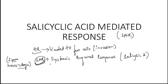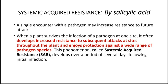What will systemic acquired resistance do? It will increase the levels of certain defense compounds including chitinases and hydrolytic enzymes. The signal molecule here is salicylic acid. SAR is activating chitinases, which are PR proteins, and some hydrolytic enzymes which hydrolyze the wall of the pathogen — they are again a group of PR proteins. A single encounter with a pathogen may increase resistance to future attacks. The plant remains aware of future attacks and wants to be prepared.